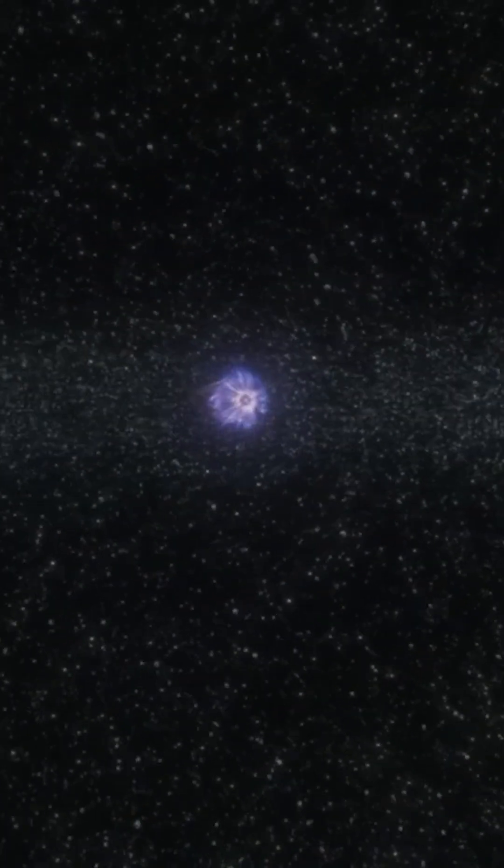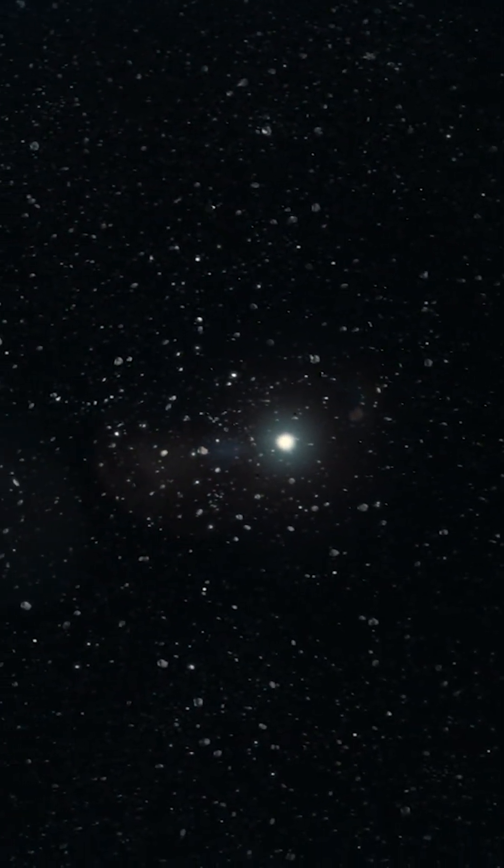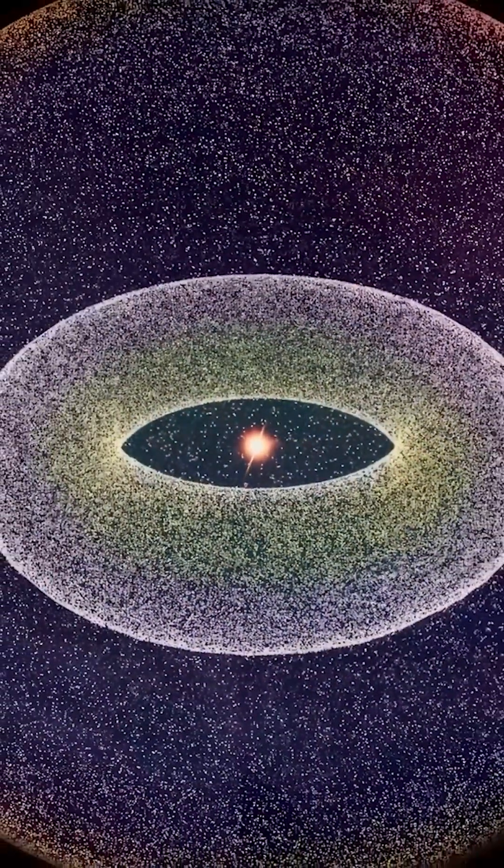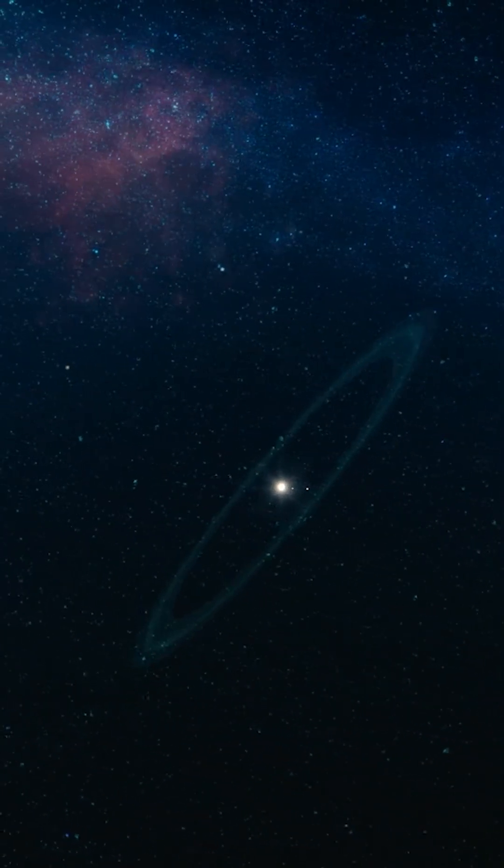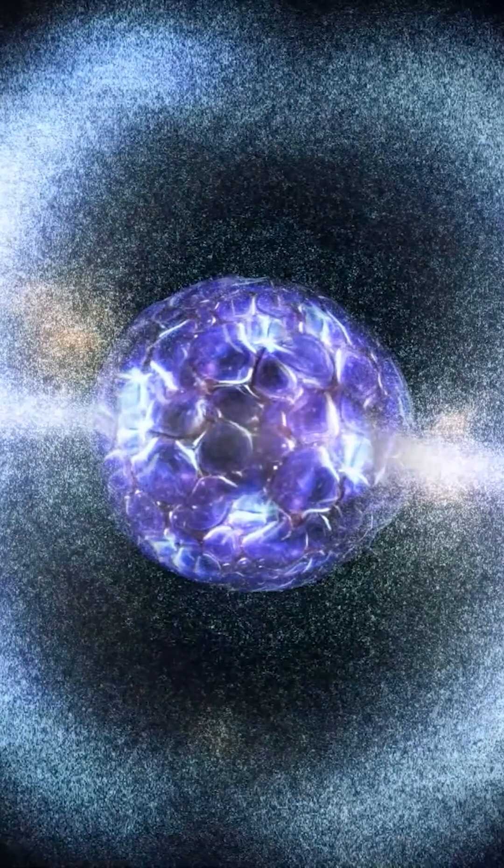Somewhere out there, hidden in that endless night, lies what scientists believe to be the elusive Oort cloud. The outer layer extends even farther, reaching out to an estimated 9.3 trillion to 18.6 trillion miles from the sun.